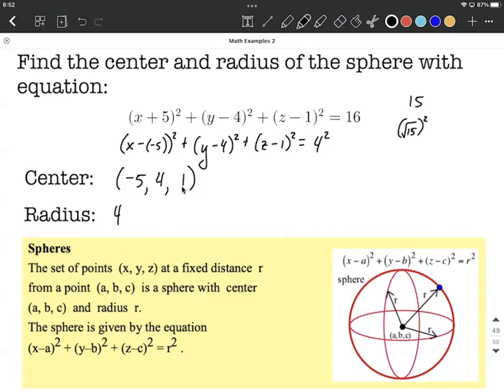Negative 1 becomes positive 1. And for the radius, you can simply take the square root of whatever number is on the right-hand side. In my example off to the side with the 15, the radius would have been the square root of 15.